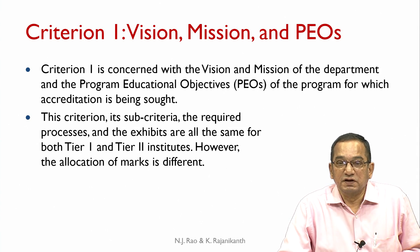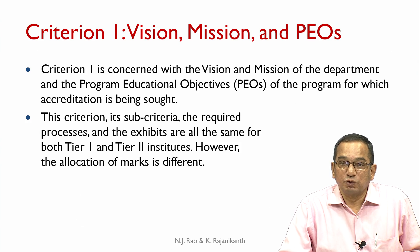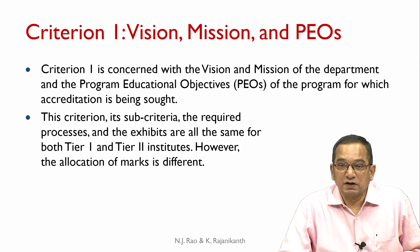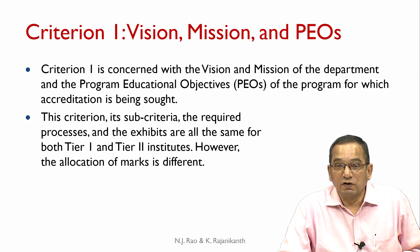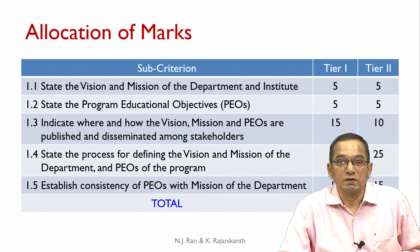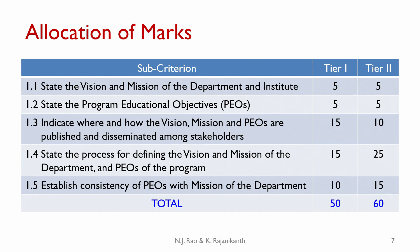Criterion 1 is concerned with vision, mission and program educational objectives (PEOs) of the program for which accreditation is being sought. For this criterion, the sub-criteria, required processes and exhibits are the same for both Tier 1 and Tier 2 Institutes. However, the allocation of marks is different. There are 5 sub-criteria: 1.1 to 1.5.